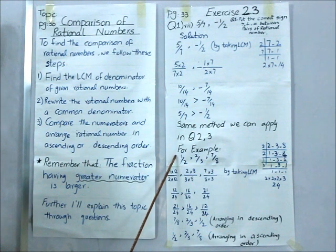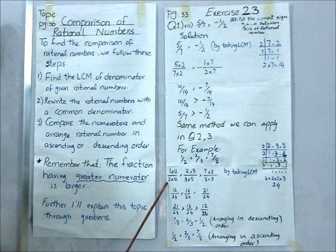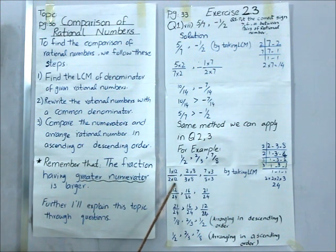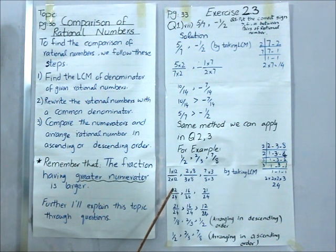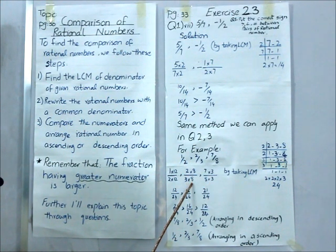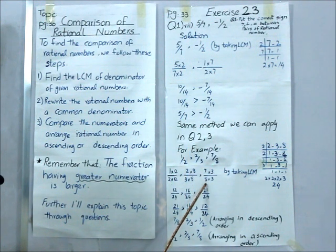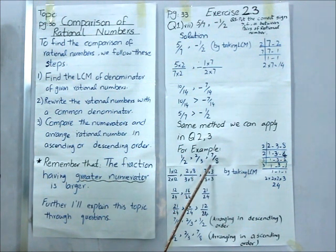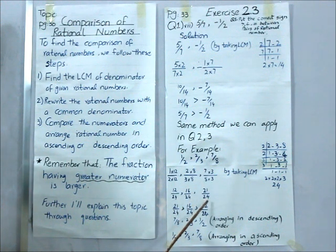Now I will take the first rational number, 1 by 2. I find that 2 times 12 equals 24, so I multiply both numerator and denominator by 12 and get 12 by 24. The same process is repeated for the second term: 3 times 8 equals 24, so both parts are multiplied by 8. For the third term, 8 times 3 equals 24, so both numerator and denominator are multiplied by 3. Finally, I got 12 by 24, 16 by 24, and 21 by 24.